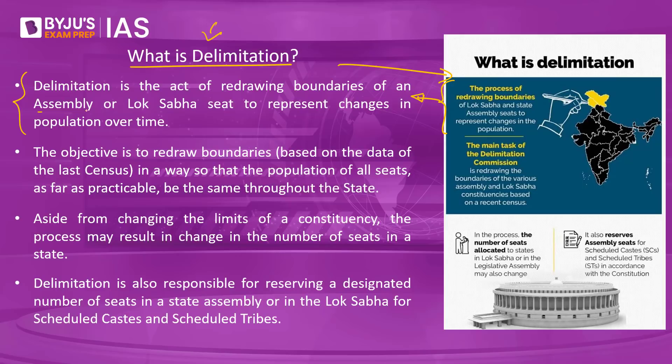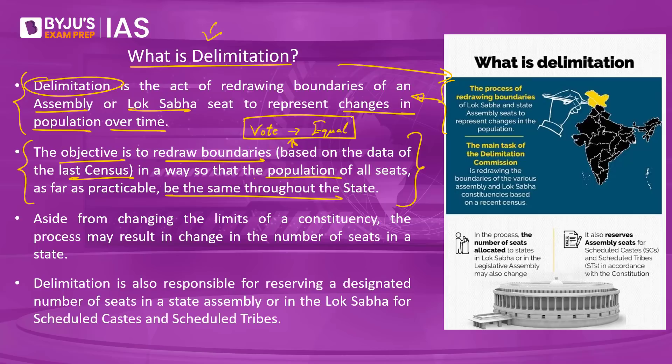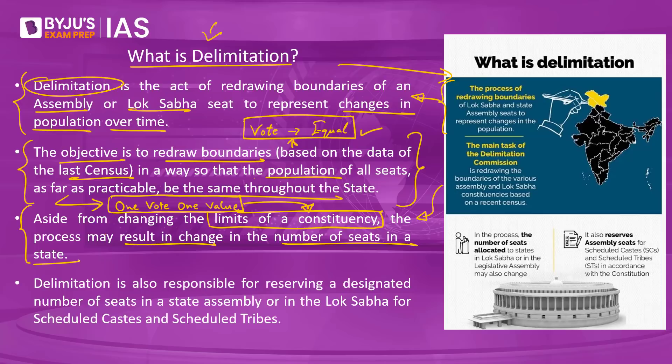Delimitation is essentially the process of redrawing the boundaries of assembly constituencies and Lok Sabha constituencies. The purpose is to ensure that the constituency reflects changes in demography — that is, population — that happen over time. The objective is to redraw boundaries based on the latest census data so that every constituency has roughly the same population, thereby ensuring that every vote holds roughly the same power. The idea is to uphold the principle of one vote, one value.